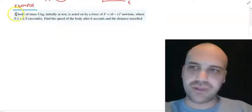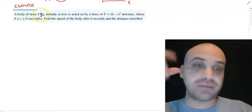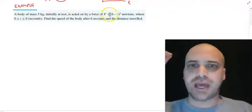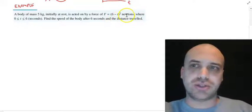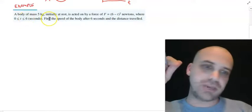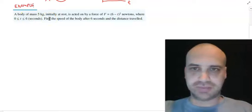So, this is the question we're going to do. We've got a body of mass 5 kilograms, initially at rest. It's being acted on by this variable force, 6 minus t squared newtons, between the time 0 and 6 seconds. Find the speed of the body after 6 seconds.